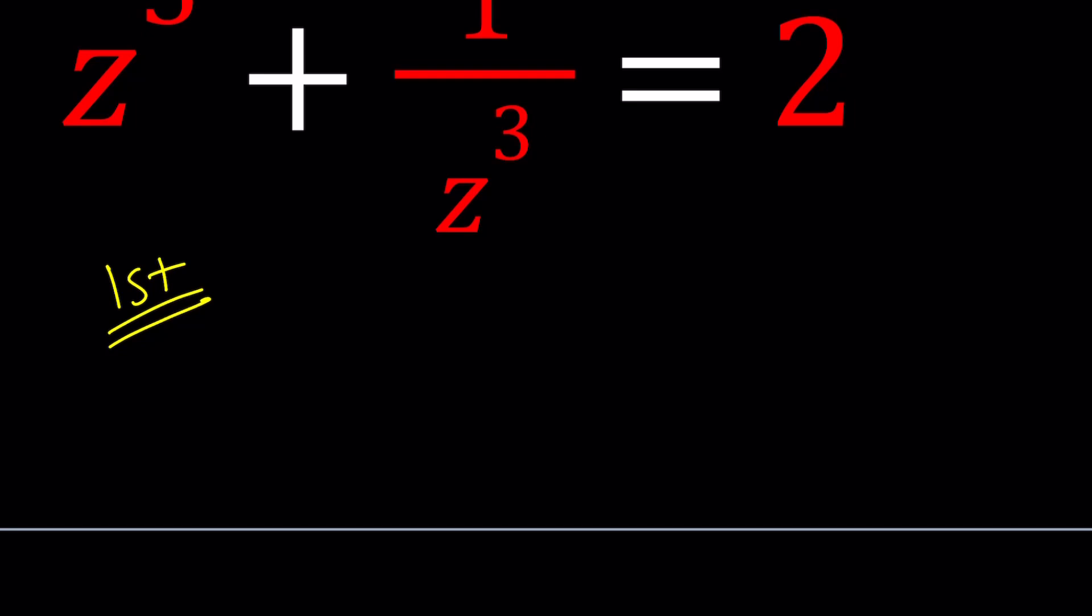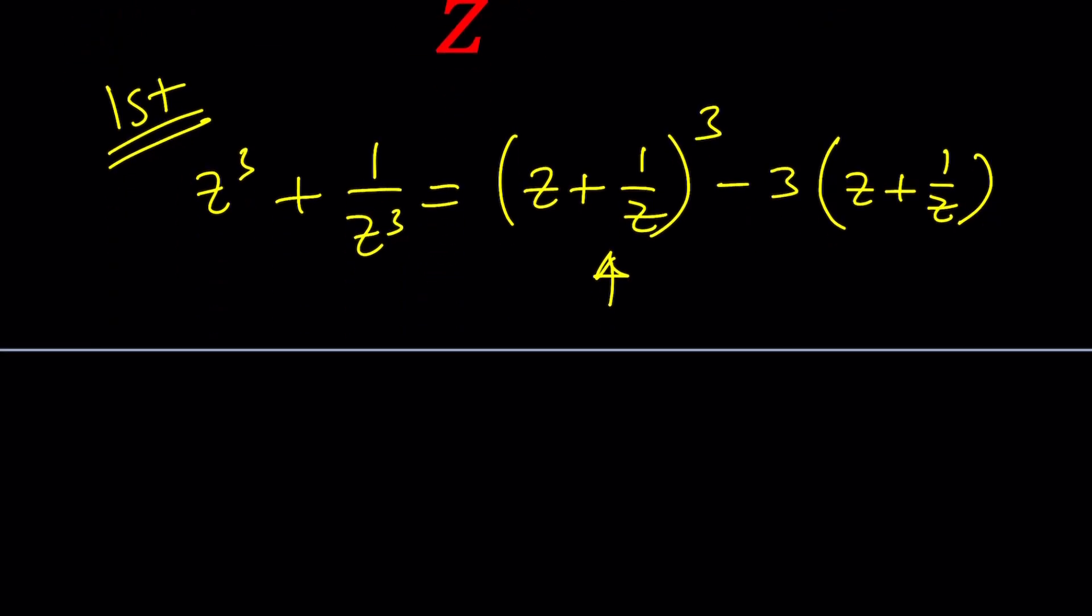So, first method. We can write the sum of two cubes as z plus 1 over z cubed, using the binomial theorem. a cubed plus b cubed minus 3ab. That's going to give you 3 times 1 because z times 1 over z times z plus 1 over z. You can also memorize this as another identity because these are really special expressions in algebra. You're going to see a lot of competition problems built around this expression and this idea. Now, let's go ahead and see what we can do from here.